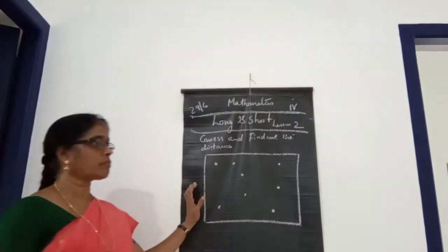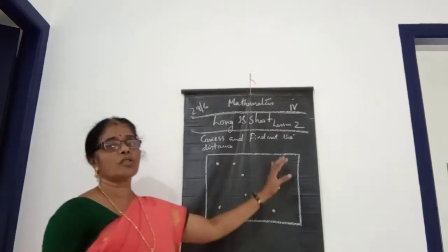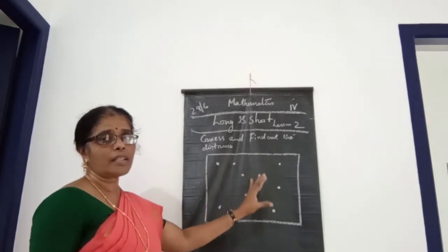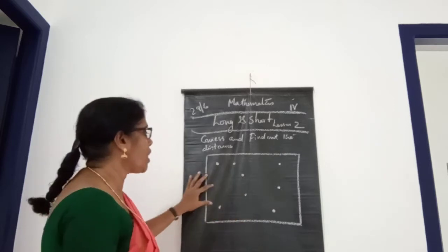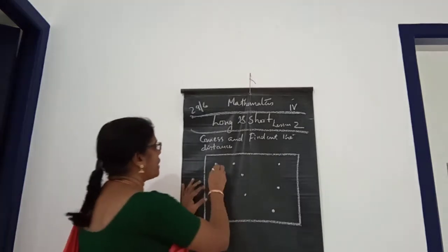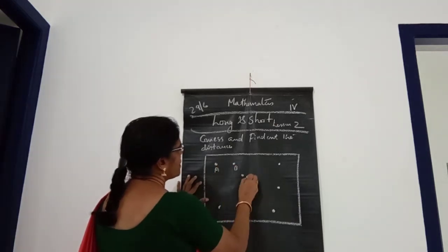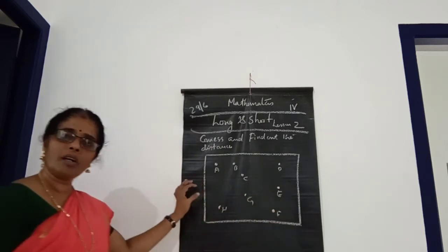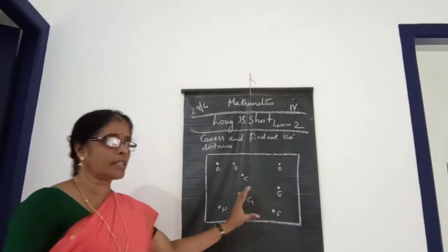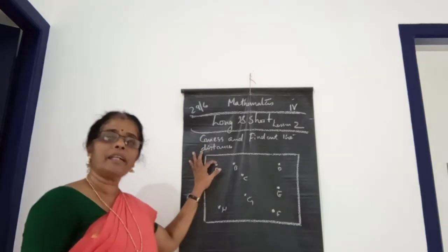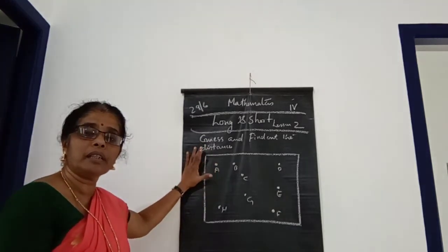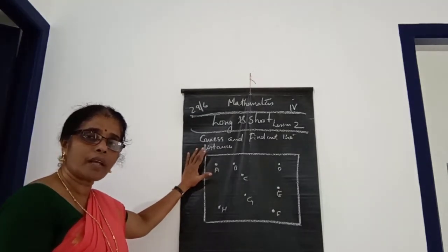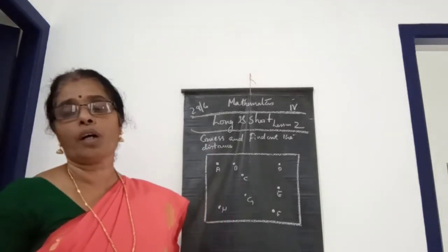Then you look here children — next one. All of you look here. You can see one square here, and inside that square you can see some dots. We can give names to those dots: A, B, C, D, E, F, G, H. We already gave names for those dots. Now we want to find out what is the distance between these two dots — which one is the nearest one and which one is the farthest one. That you have to find out.